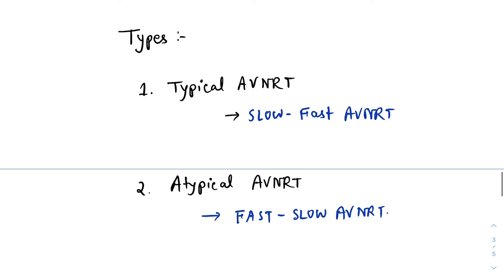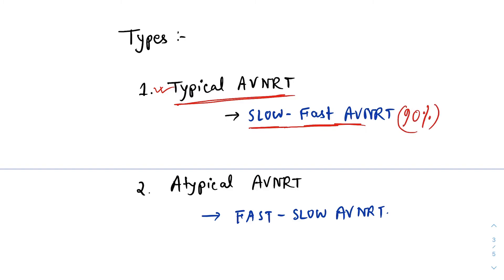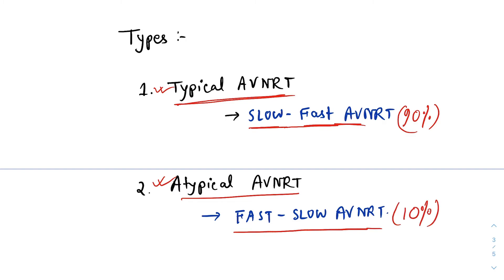AVNRT has two types. One is typical AVNRT, where the impulse travels down through the slow pathway and then runs upwards through the fast pathway — that is slow-fast AVNRT, which I just discussed. Almost around 90% of AVNRTs are of this variety. There is one more variety, atypical AVNRT, where the impulse travels downwards through the fast pathway and then goes back upwards through the slow pathway — that is fast-slow AVNRT, accounting for almost 10% of AVNRTs.